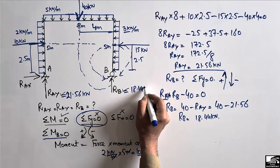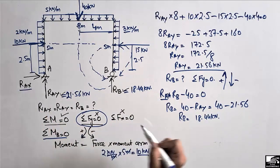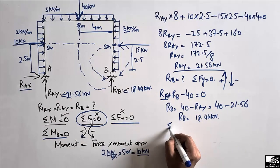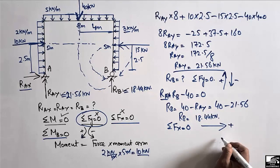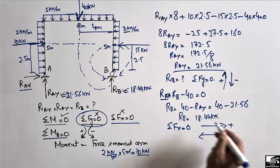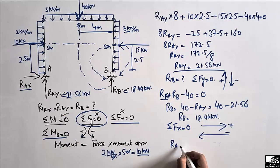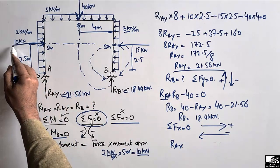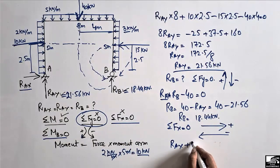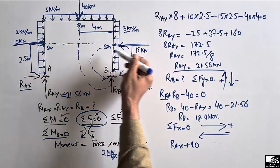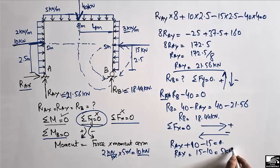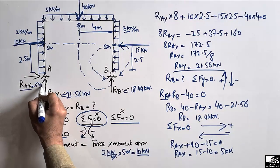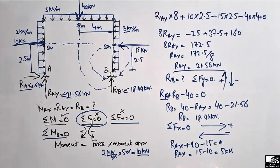Finally, to find RAX, we use the horizontal equilibrium equation: summation of horizontal forces equal to zero. Forces acting in one direction are positive, the opposite direction negative. RAX and the 10 kN resultant from the left column act in the same direction (positive), while the 15 kN resultant from the right column acts in the opposite direction (negative). So RAX + 10 − 15 = 0, giving RAX = 5 kN. This is how we find support reactions for a given frame.